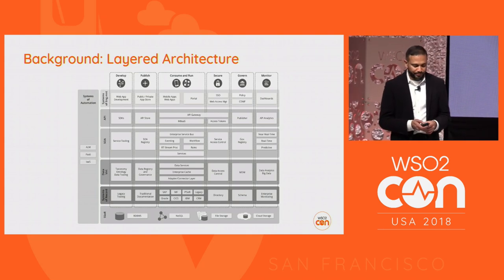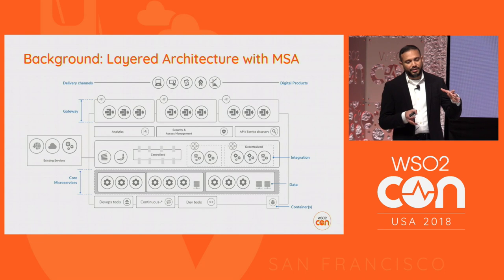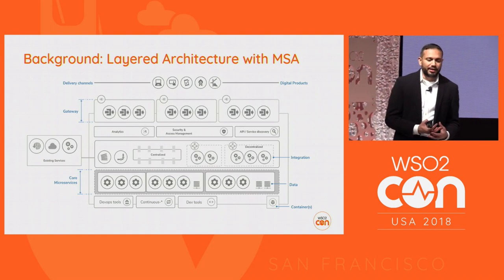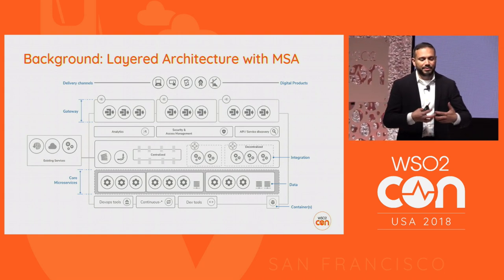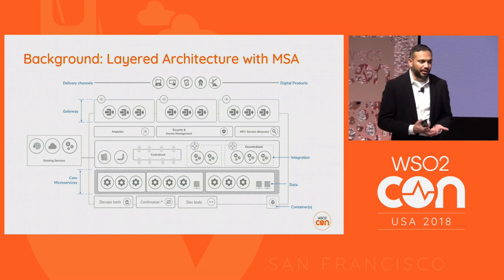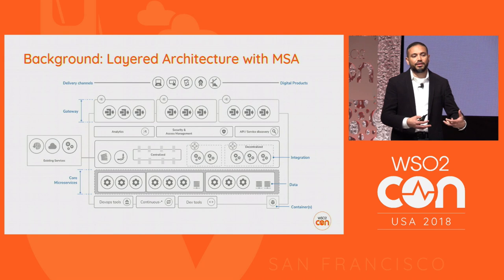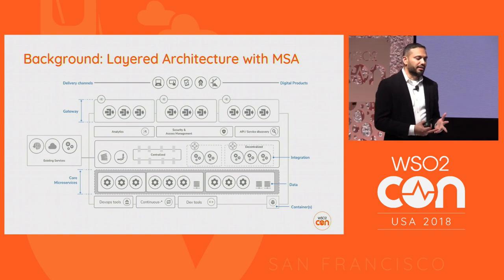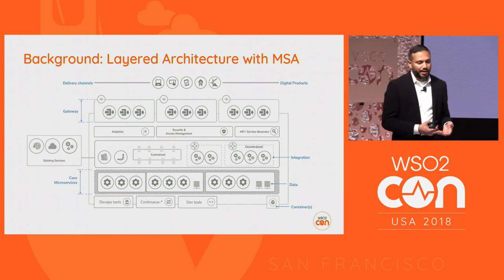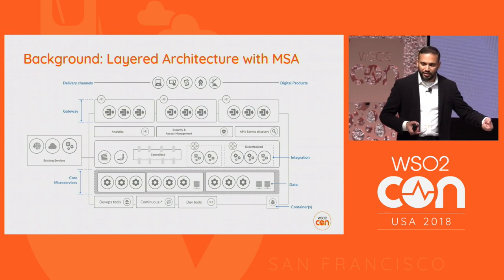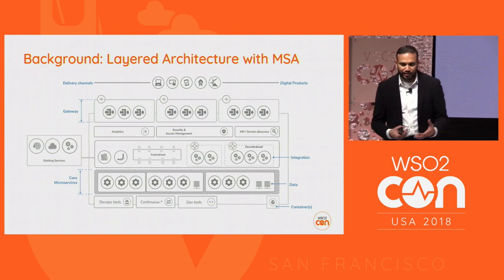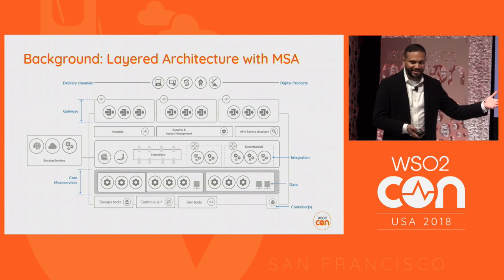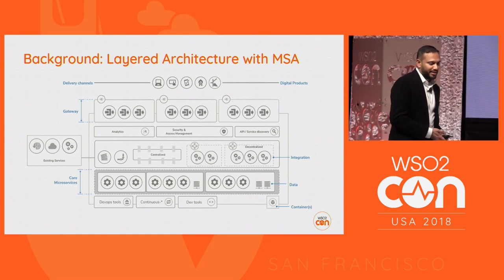Then we moved to microservices architecture about four years back. The original microservices patterns are kind of a spaghetti thing, but when you apply them inside the enterprise, they became layered again because you need to deal with existing data, existing systems, and partner systems. So microservices became another layer on a layered architecture, surrounded by the other layers you're already running. That was the reference architecture we had before yesterday, even in our slide decks.